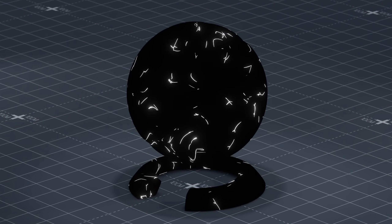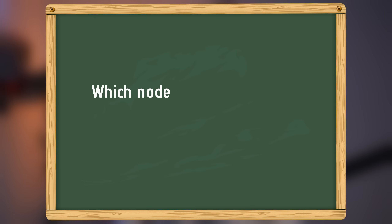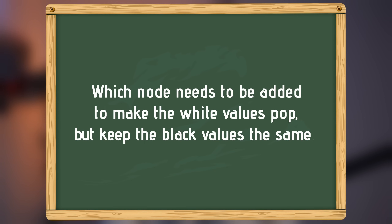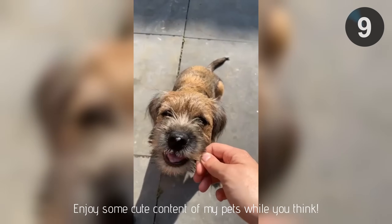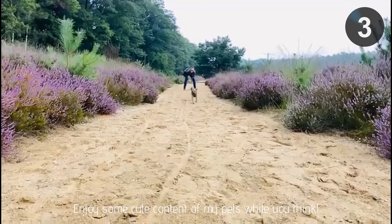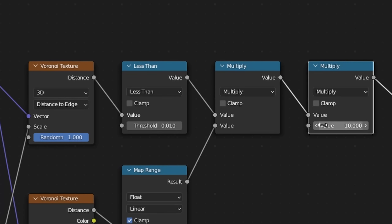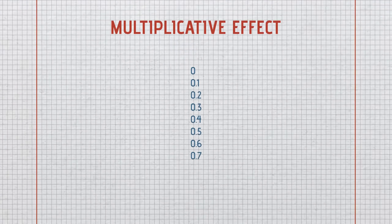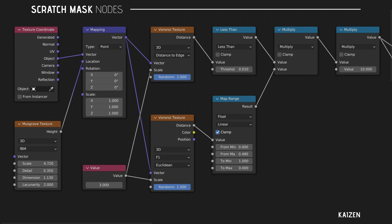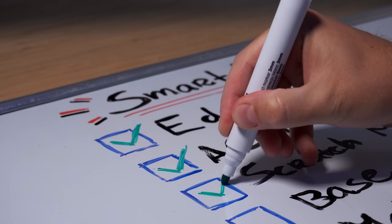The final thing this mask needs is a bit stronger contrast. So here's a little test to see if you've picked up something so far — which node do you need to add at the end of our node system to make the white values pop while the black values stay exactly the same? Did you answer multiply? Nice going. Indeed, the multiply will do just that. I've changed the range of values to go from 0 to 10, making sure all values that are not 0 are now 10 times stronger. Here are the final values I used for the scratch mask. So we now have three amazing procedural masks.